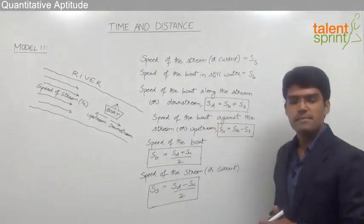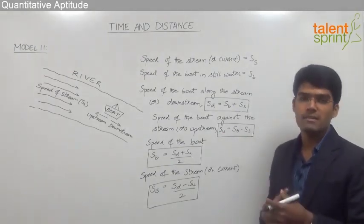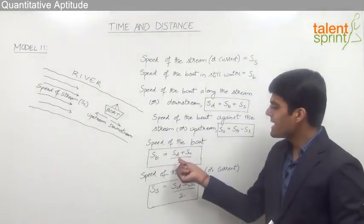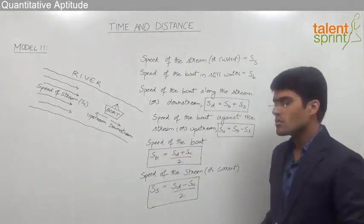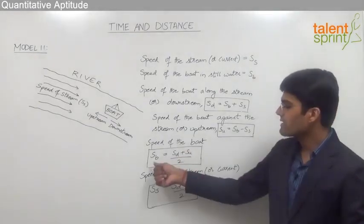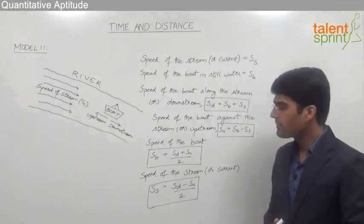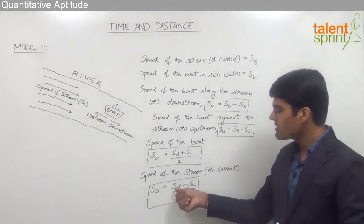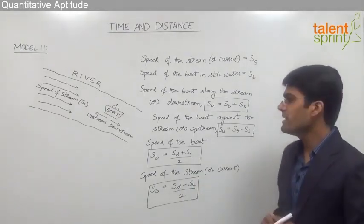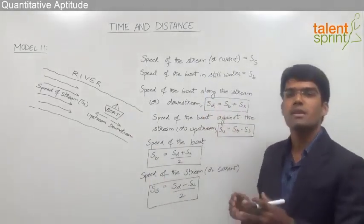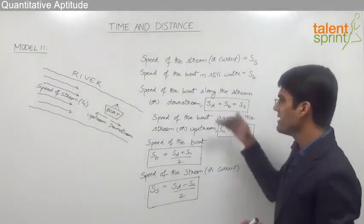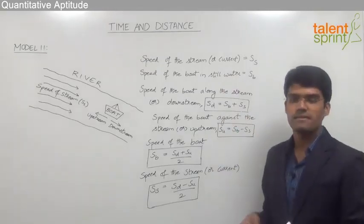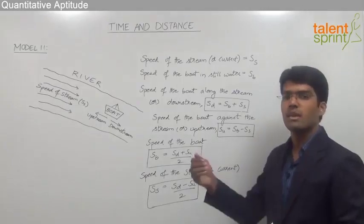Now let us see how we can find the speed of the boat and the speed of the stream when downstream speed sd and upstream speed su are given. The speed of the boat sb = (sd + su) / 2, and the speed of the stream ss = (sd − su) / 2. Remember, in some cases instead of a boat the question involves a man swimming in a river — the equations remain the same; we simply replace the speed of the boat with the speed of the man in still water.